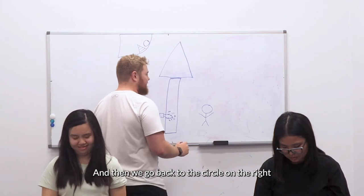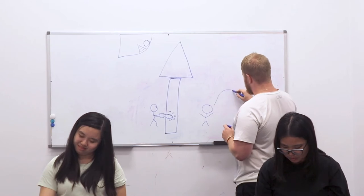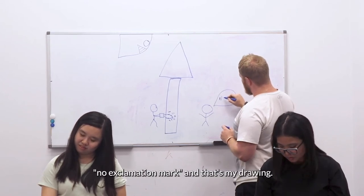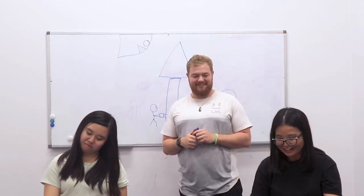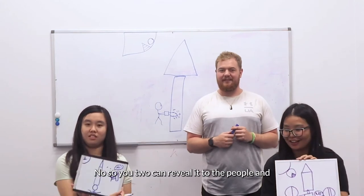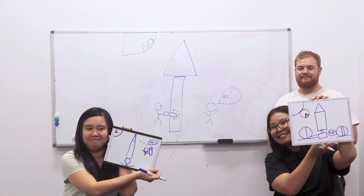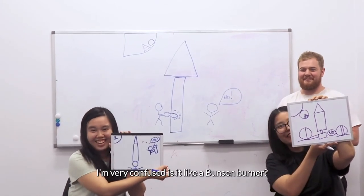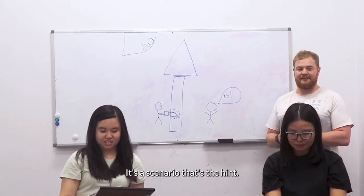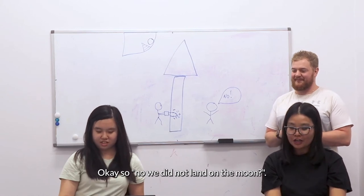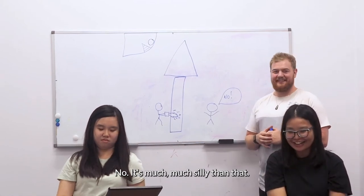Then we go back to the circle on the right and draw a speech bubble. And in that speech bubble, write 'no!' And that's my drawing. Is it a rocket? No. You two can reveal it to the people and compare it to the picture on the board. I'm very confused. Is it like a Bunsen burner? It's a scenario — that's the hint. We did not land on the moon. It's much much sillier than that.